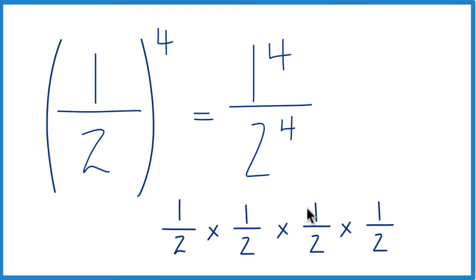So one times one times one times one, that's one to the fourth, and two times two times two times two, that's two to the fourth.